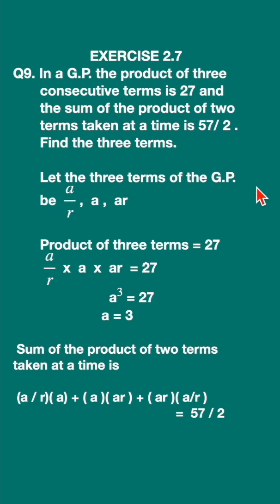Let the three terms of the GP be a upon r, a, and ar. This assumption you should be careful to do. Once you do this, it will be very easy.